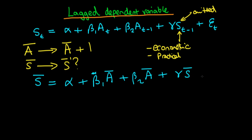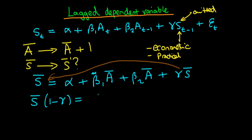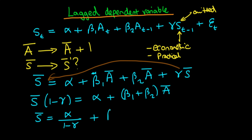We replace T-minus-1 with S-bar and assume the error term isn't important in the long run. Taking the gamma term to the other side gives us S-bar times (1 minus gamma) equals alpha plus (beta-1 plus beta-2) times A-bar. Finally, S-bar equals alpha over (1 minus gamma) plus (beta-1 plus beta-2) over (1 minus gamma) times A-bar. Written this way, it's immediately obvious that the coefficient on A-bar is the long-run effect of a permanent one-unit increase in advertising.